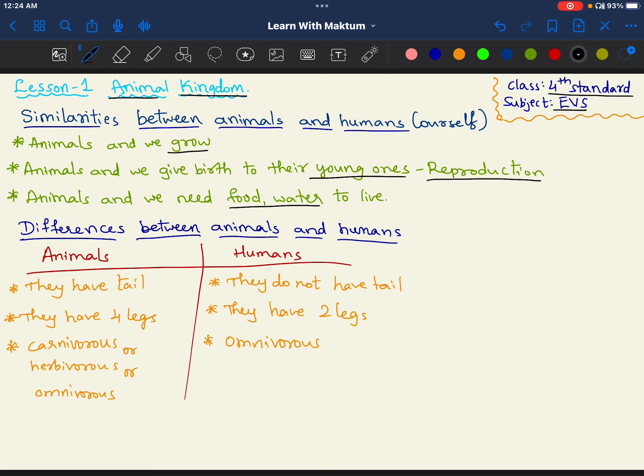In our animals, they have tail, but we do not have tail. They have four legs. Again we call them as forelimbs and hindlimbs. We have only two legs. And in animals we can see animals may be carnivorous, herbivorous or omnivorous, whereas humans are omnivorous. What does this word mean? We will see now one by one.